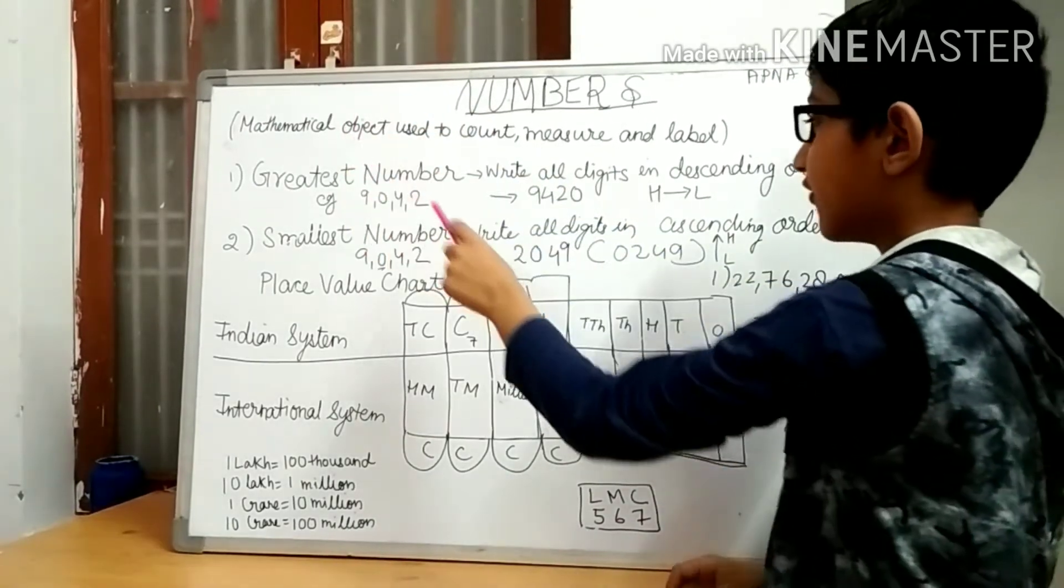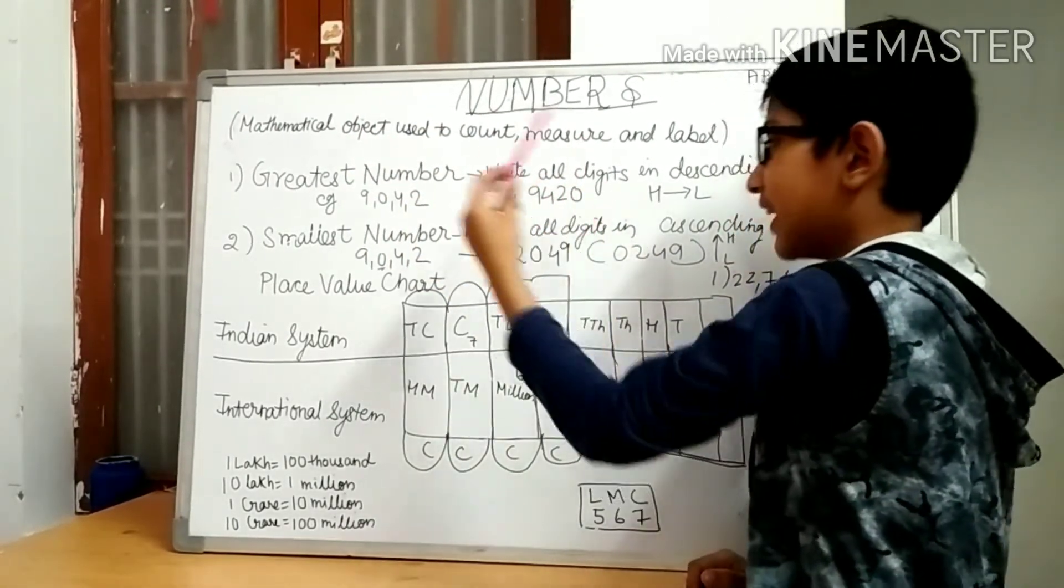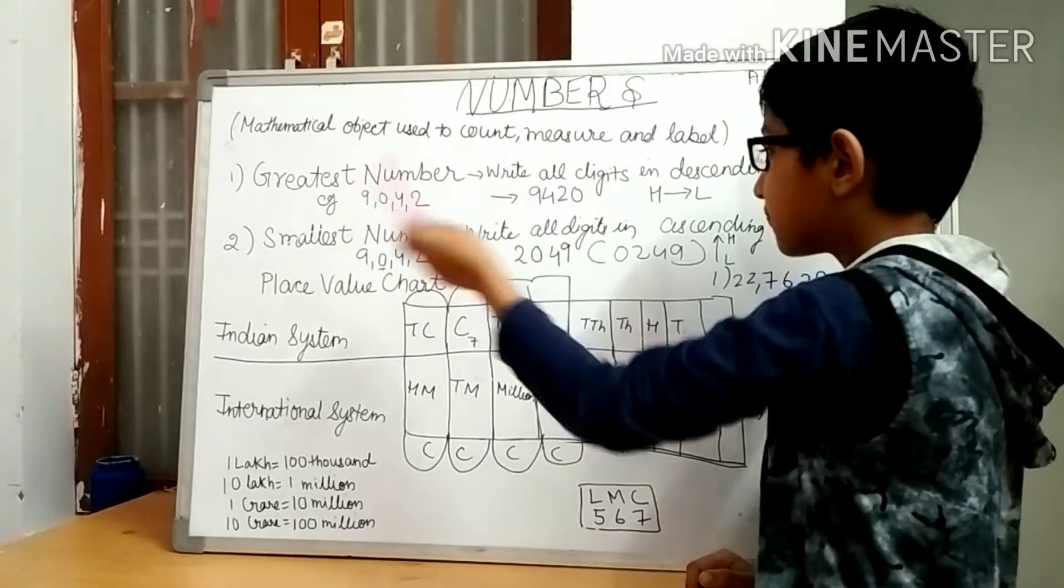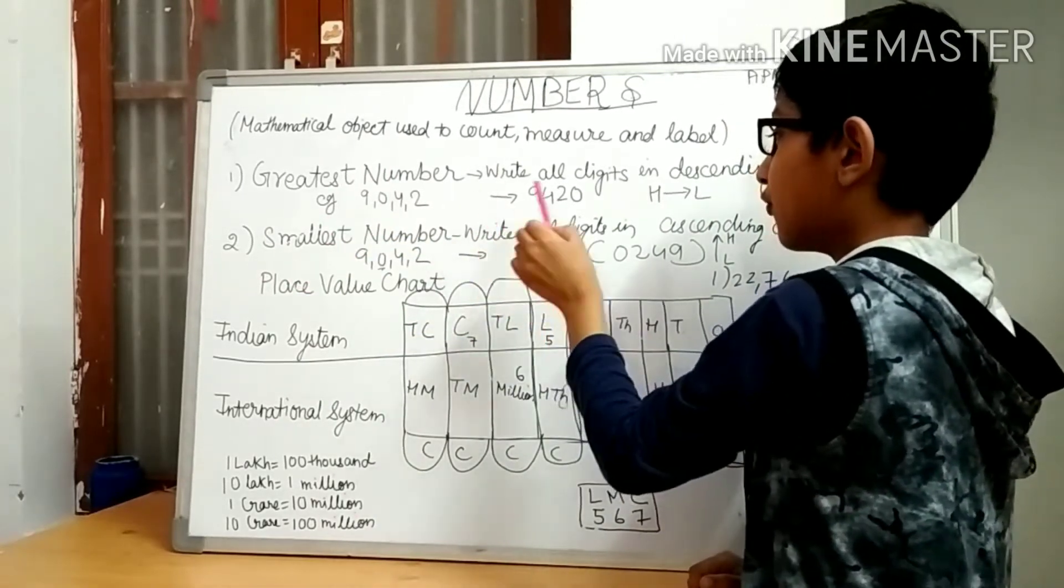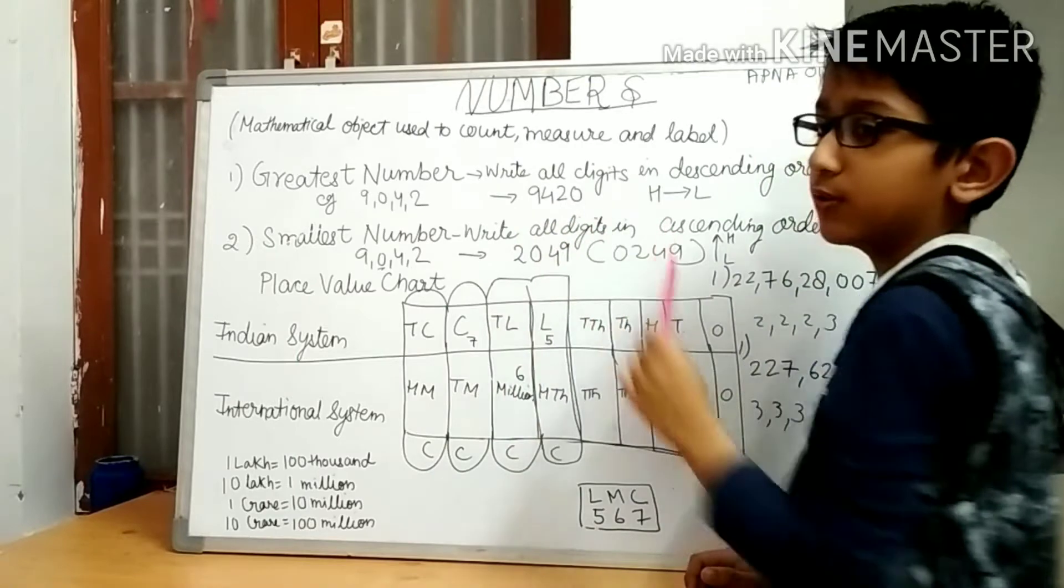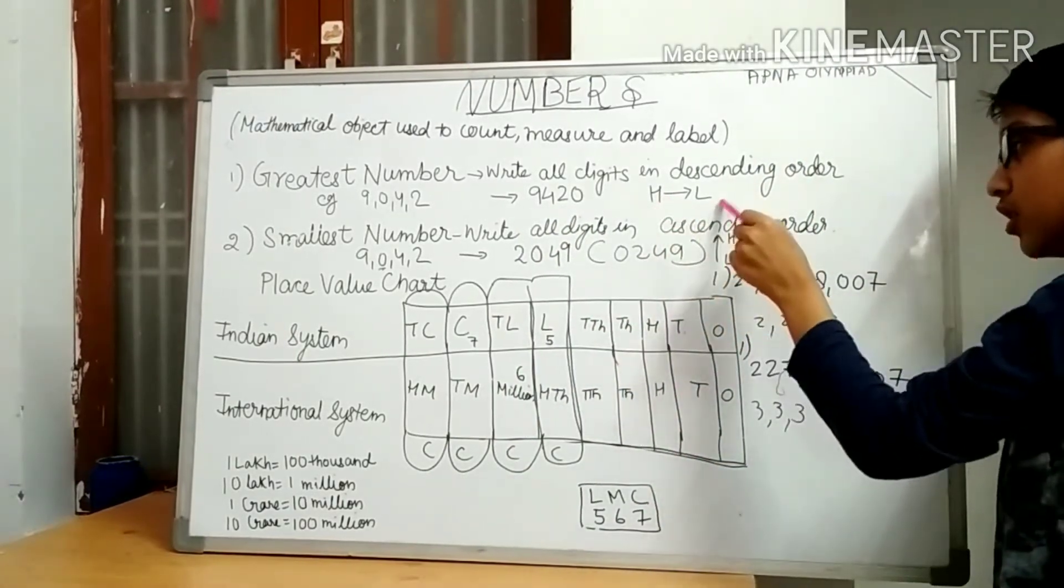In descending order we have to write the greatest digit at extreme left, then 4, then 2, and then 0. We have to write highest to lowest.